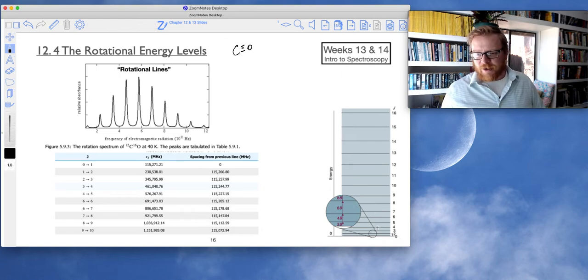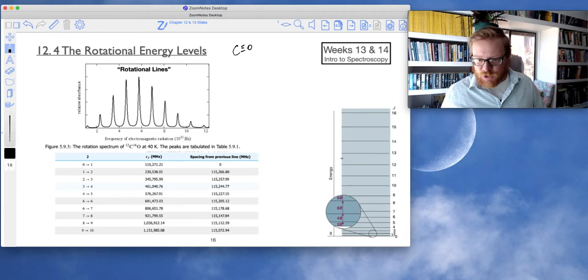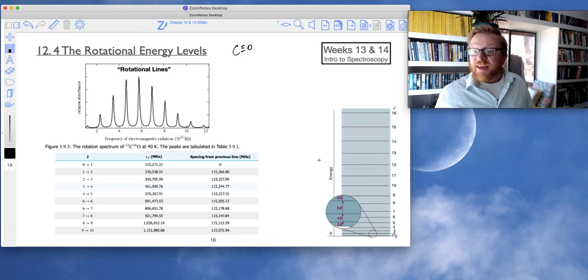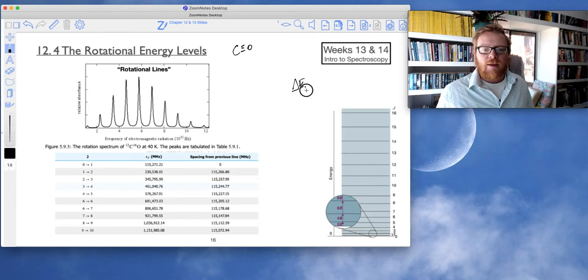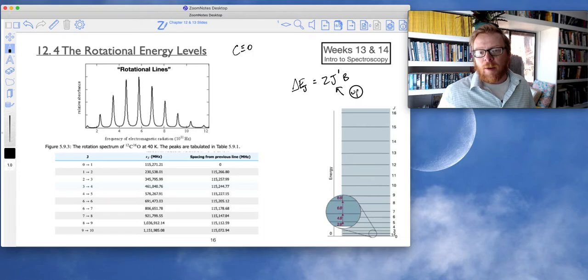So now let's chew the spectrum apart. So here I was showing you how I put that together before, how each of these levels grow by 2b at a time. 2b, 4b, 6b, 8b, 10b, 12b, etc. So then now the difference between each one of those is 2 times b. So delta ej equals 2 times j prime times b, where j prime is the upper level.